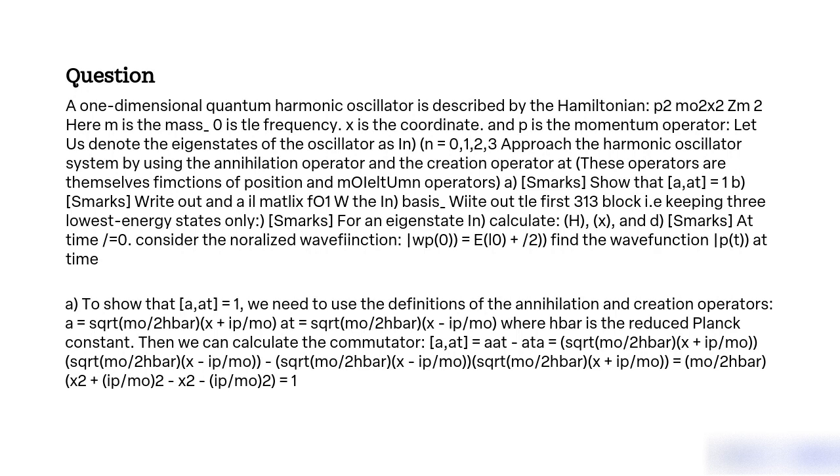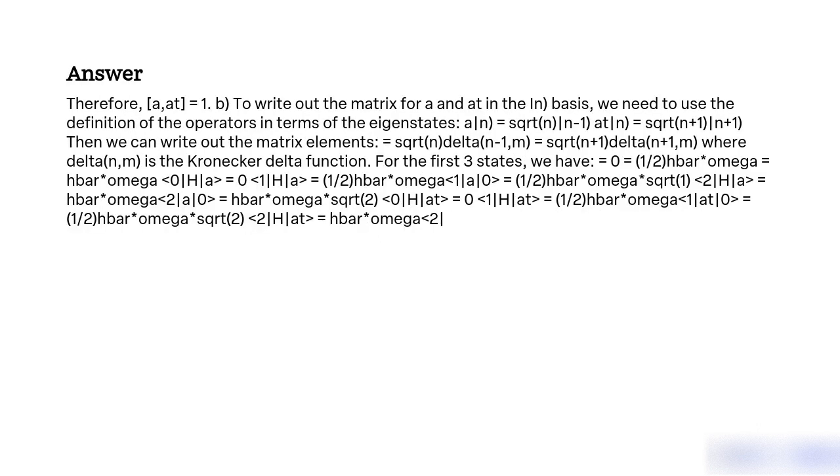Then we can calculate the commutator: [a,a†] = aa† - a†a = [√(mω/2ℏ)x + ip/√(2mωℏ)][√(mω/2ℏ)x - ip/√(2mωℏ)] - [√(mω/2ℏ)x - ip/√(2mωℏ)][√(mω/2ℏ)x + ip/√(2mωℏ)] = (mω/2ℏ)x² + (ip/√(2mωℏ))² - x² - (ip/√(2mωℏ))² = 1. Therefore, [a,a†] = 1.